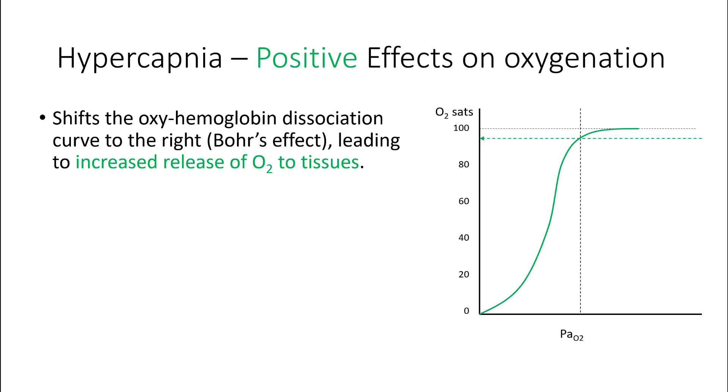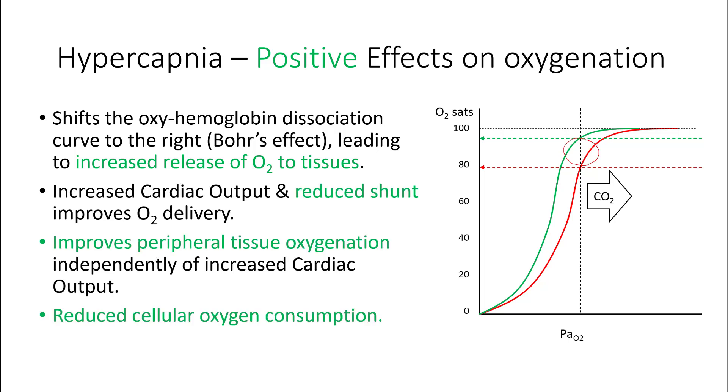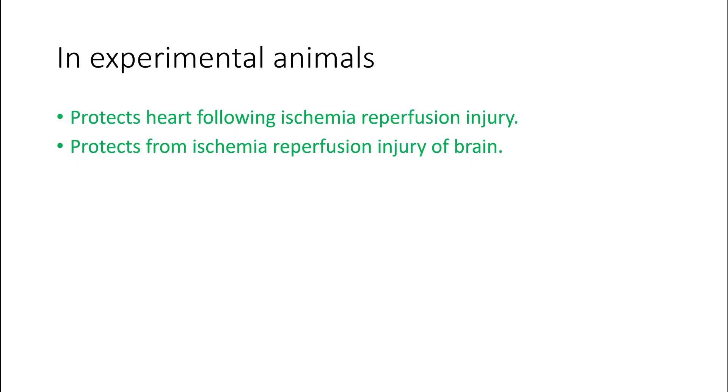One of the important effects of hypercapnia is its positive effect on oxygen. CO2 shifts the oxyhemoglobin dissociation curve toward the right and therefore increases oxygen delivery to the tissues. It also increases cardiac output and reduces shunt, as we have seen previously. It also has been shown to improve peripheral tissue oxygenation and reduce cellular oxygen consumption. In experimental animals, hypercapnic acidosis has shown to protect the heart following ischemia-reperfusion injury, and similar observation has been seen in the brain as well.